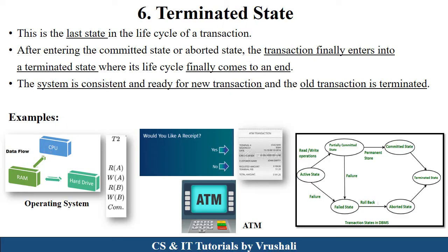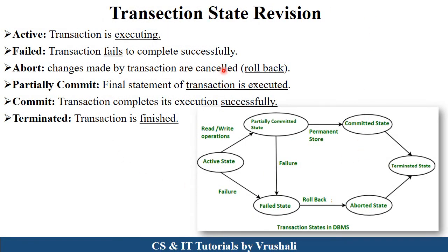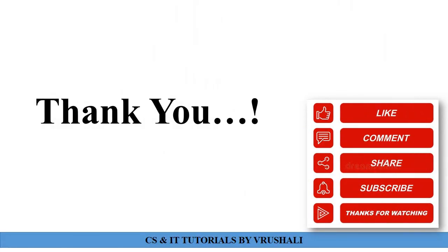To summarize the transaction state diagram: Starting from the Active State, there are two paths. The successful path goes: Active → Partially Committed (read/write operations performed in buffer) → Committed (data permanently stored in hard disk) → Terminated (operation ends, ready for new transaction). The failure path goes: Active → Fail (due to errors) → Aborted (rollback or kill the transaction) → Terminated → restart from Active. In the next session we will discuss ACID properties. Thank you, keep learning.